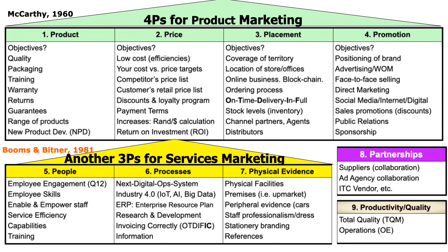Think of Avis. They do have a product — it's a car — but the real product is the service behind the car. How quickly can I hire the car? When I return the car, the processes have to happen quickly. If you had to choose between two car hire companies and their Toyotas are all the same, the big criteria you'll use to go back is the courtesy of the people, the swiftness of the processes, and the physical evidence — the cleanliness of the premises, staff professionalism, the stationery, etc. And the eighth P of marketing is partnerships.